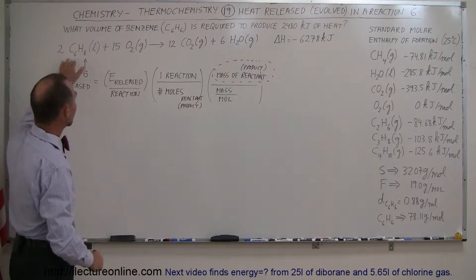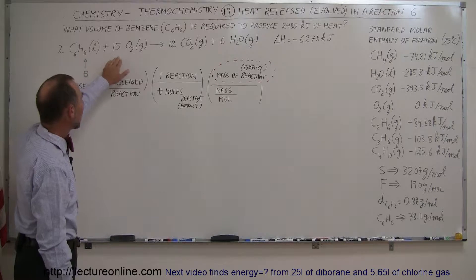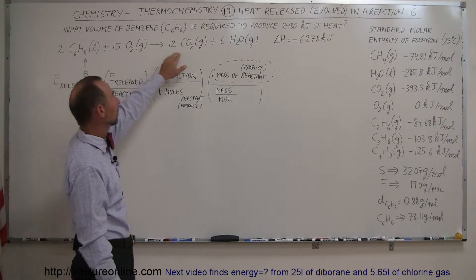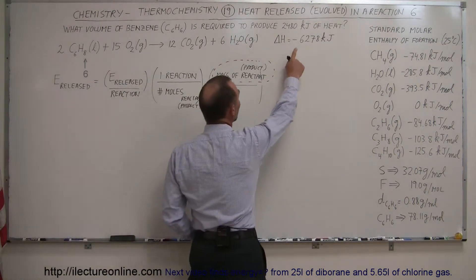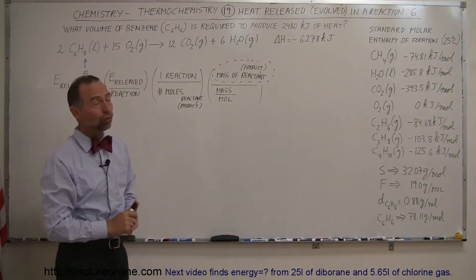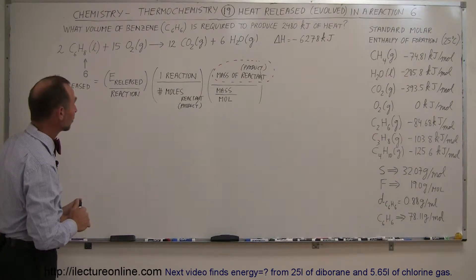So here's the chemical reaction for benzene: we put some benzene together with oxygen, we combust it, we get carbon dioxide and water vapor. The enthalpy change here is minus 6278 kilojoules, and that's quite a bit for a reaction like this.